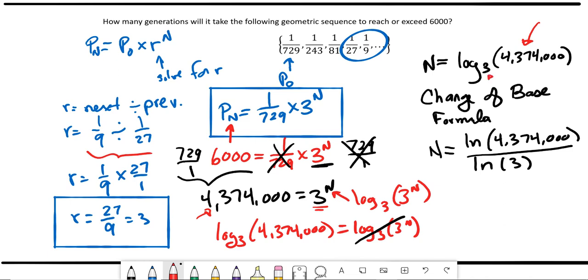The change of base formula says you can take a log of any base and take the argument. That's what's inside the parentheses. So I took natural log of 4,374,000, and that goes in a numerator. And then you take the log of the same base, ln has to match top and bottom. And we put the base of the log, and we get ln of 3.